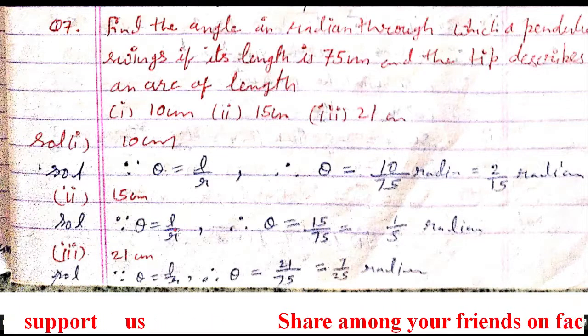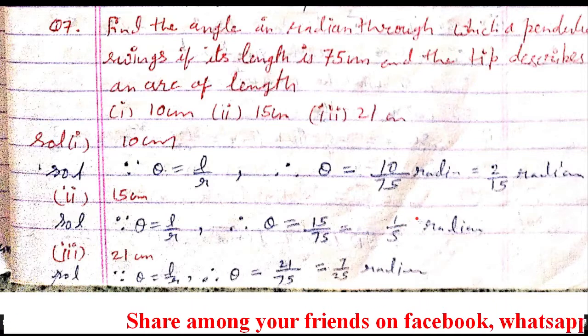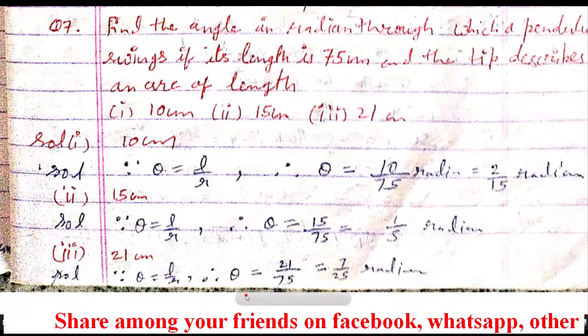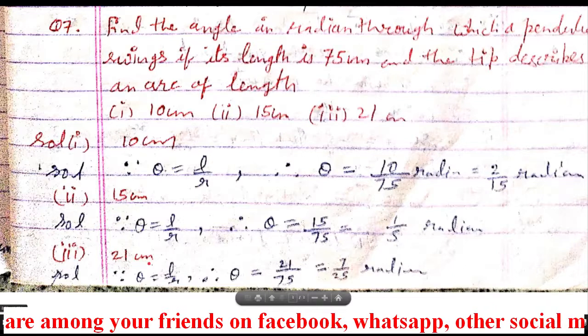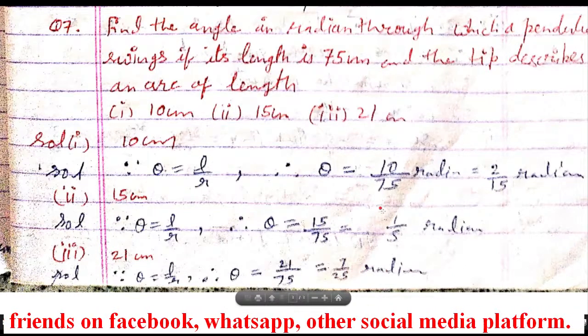So length of arc is 15 and radius, that is pendulum's length, that is 75. Cancel it, you will get 1/5 radian. Next, it is 21 centimeters. Subsequently, you will get 7/25 radian.